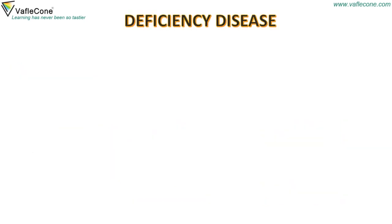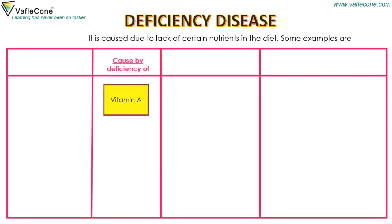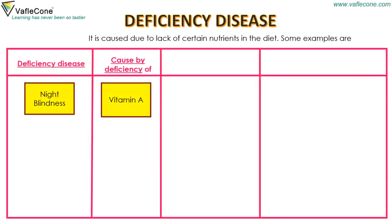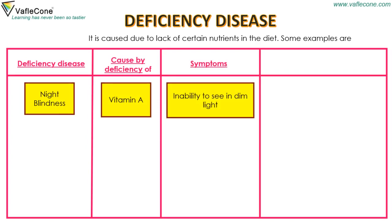Deficiency disease is caused due to lack of certain nutrients in the diet. For example, lack of vitamin A causes night blindness. Its symptoms are inability to see in dim light.